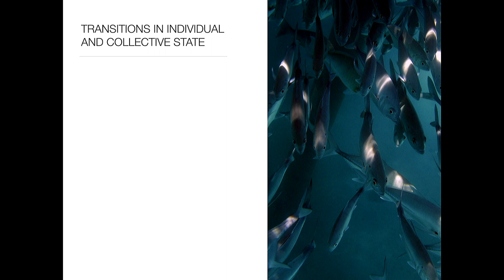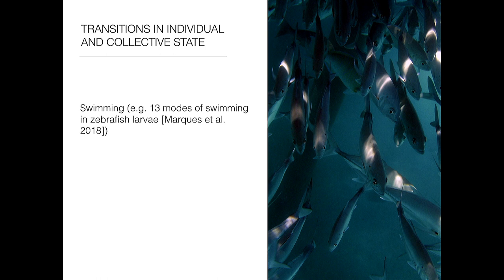We have these three broad states: swimming — which is actually a poor behavioral classifier; a recent paper using machine learning found 13 modes of swimming in zebrafish larvae — then fleeing or being attacked, and feeding swarms. This is not an exhaustive list of behaviors — that's kind of the point. We want to characterize what behaviors there are and how the transitions amongst these behaviors are manifested.